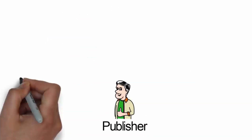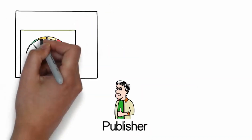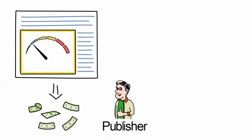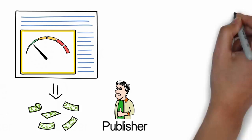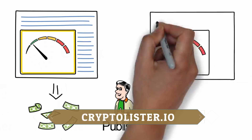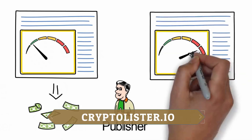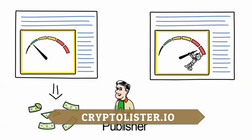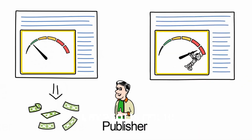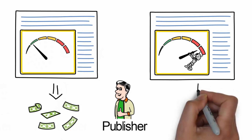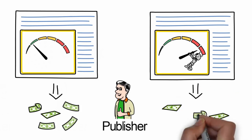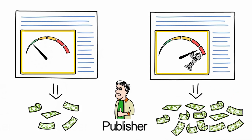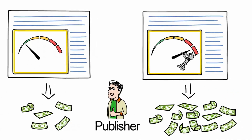Publishers no longer need to worry about filling ad slots or low ad returns. This burden is taken over by the artificial intelligence. Every slot is filled with the most relevant advertising content at any given moment in time, resulting in higher earnings for publishers.